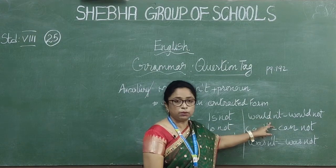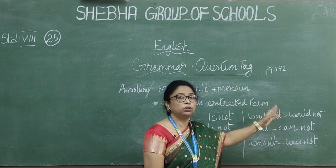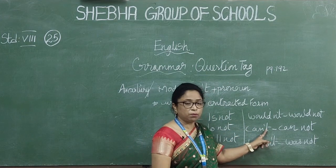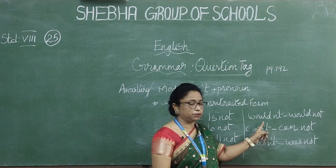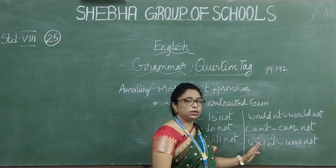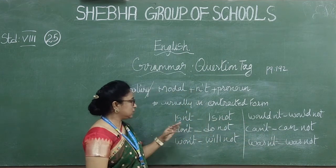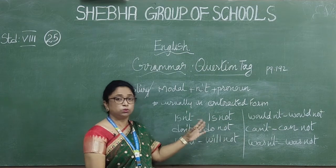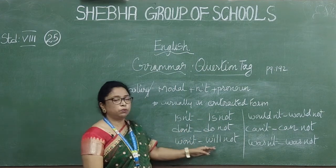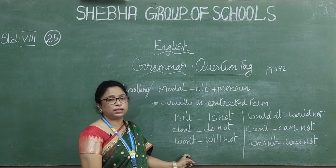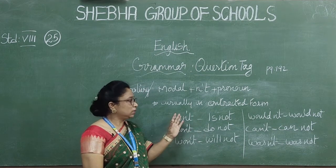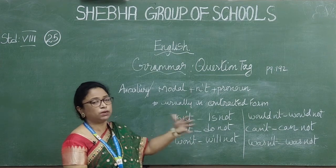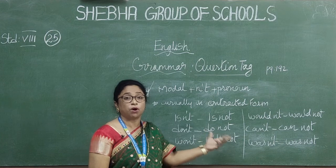What are contracted forms? 'Wouldn't' means 'would not'. 'Can't' means 'cannot' — the 'o' is replaced by an apostrophe. 'Wasn't' means 'was not'. 'Isn't' means 'is not'. 'Don't' means 'do not'. 'Won't' means 'will not'. In your page number 193, all these contracted words are given — go through them.